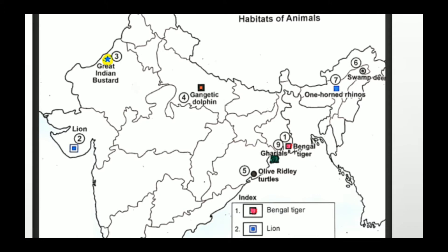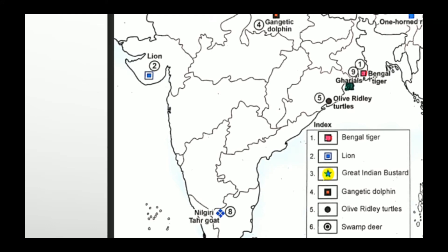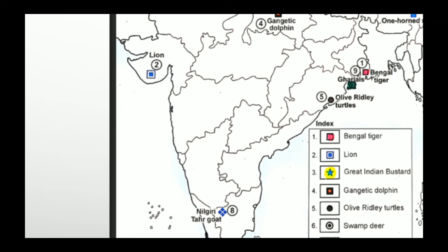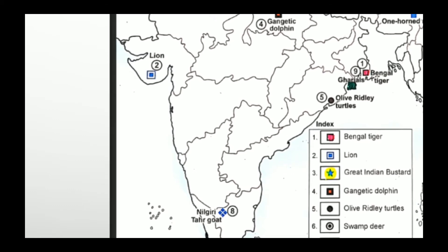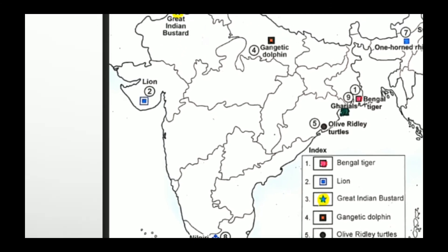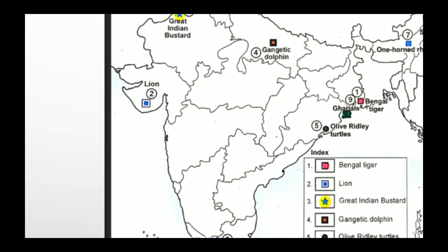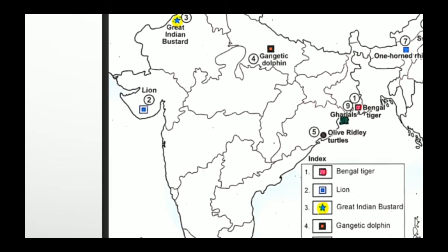Number five, olive ridley turtle, is found in the coastal areas of Odisha. Number six, swamp deer, is in Assam. Number seven, one-horned rhino, is also found in Assam. Number eight is the Nilgiri tahr goat, which is found in Tamil Nadu. The last one is the gharial, also called gavial — it is almost like an alligator and it is found in the swampy areas or deltaic regions of West Bengal, also called Sundarbans. So Bengal tiger and gharial are both found in the deltaic regions of Sundarbans.